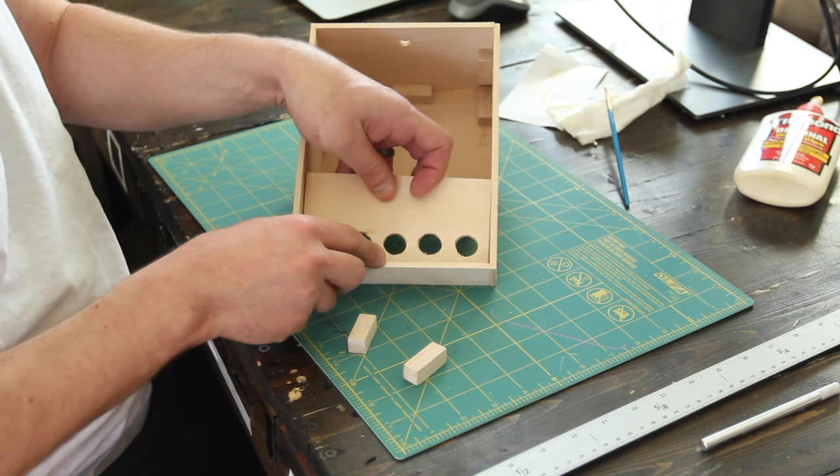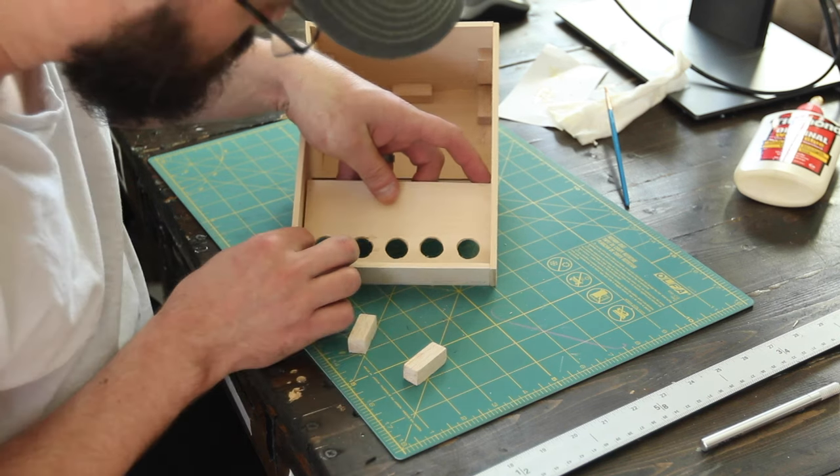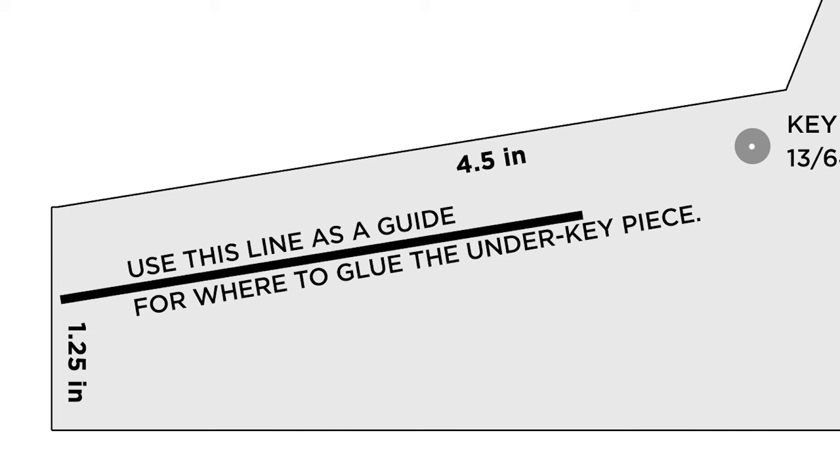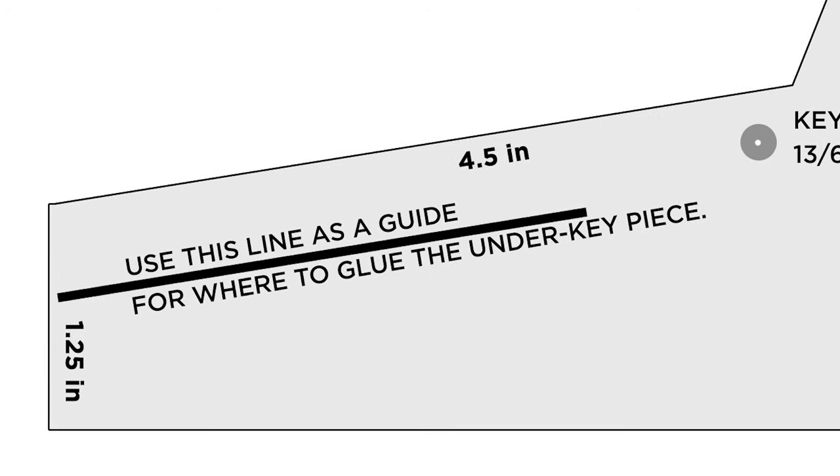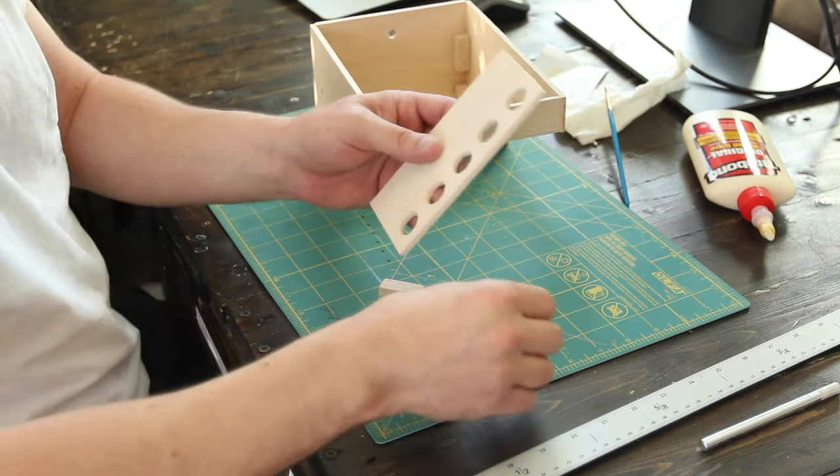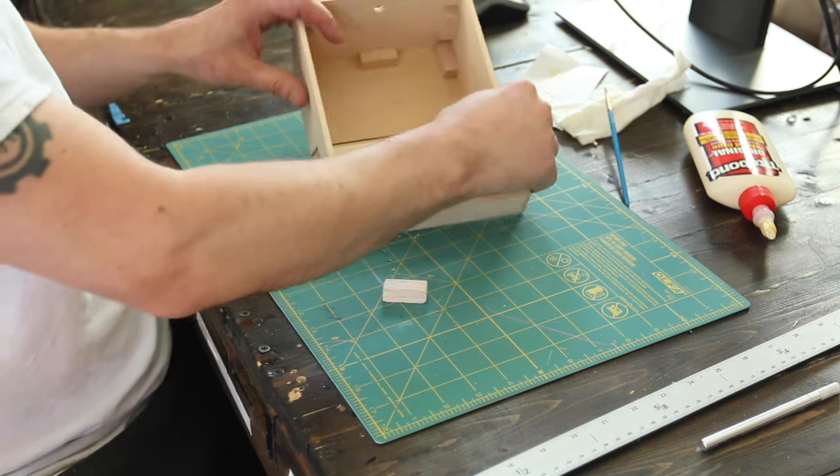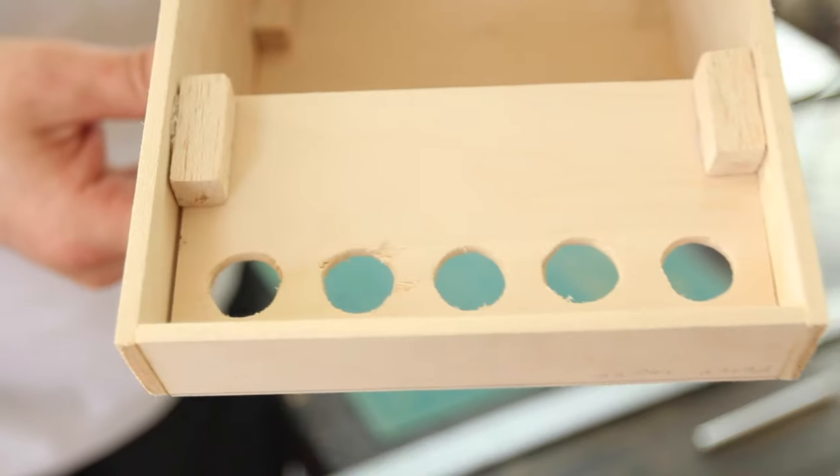For the panel that goes under the keys, make sure that the holes are facing the front of the case. Use the marking on the template for a guide where to glue this piece into place. There's some room for error here, so it's okay if you weren't dead on. You'll want to make sure to put some little dowel supports under here as well.